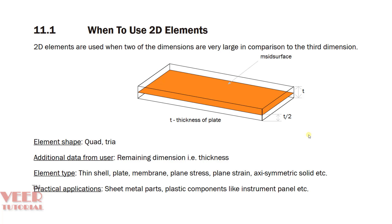In this lecture, we are going to learn what is mid-surfacing, why it is useful, and how to extract mid-surface in HyperMesh. Whenever we have a plate like this, it has a width, a height, and a thickness. Whenever two dimensions are very large compared to the third dimension — width and height are very large compared to thickness — instead of creating a 3D mesh, we are going to create a 2D mesh. We extract the mid-surface of the part, mesh only that mid-surface, and then provide the thickness to that mesh. This is called mid-surfacing.